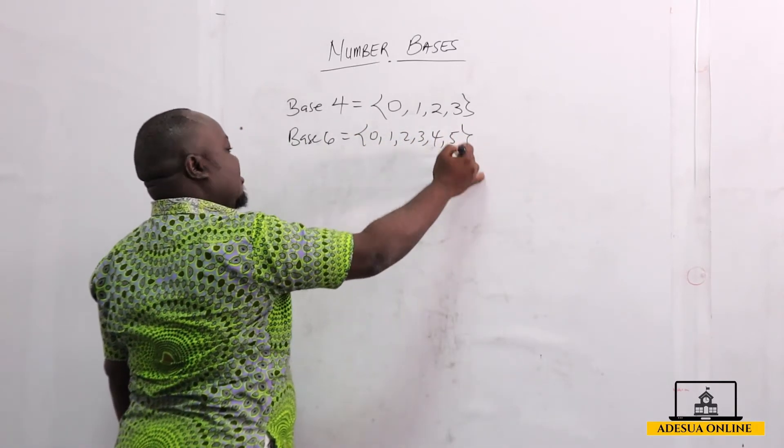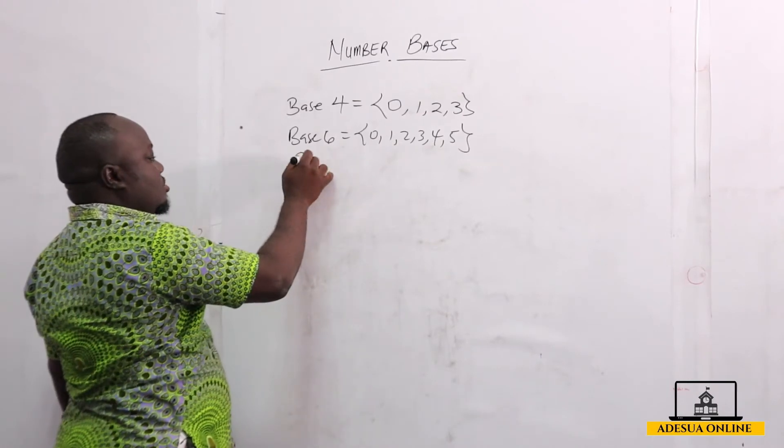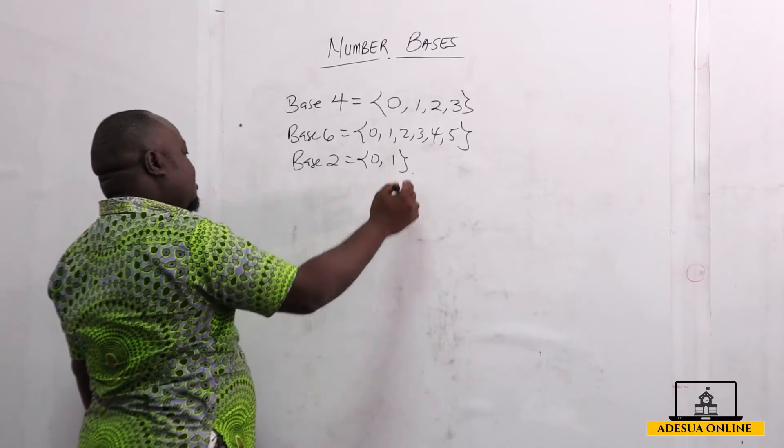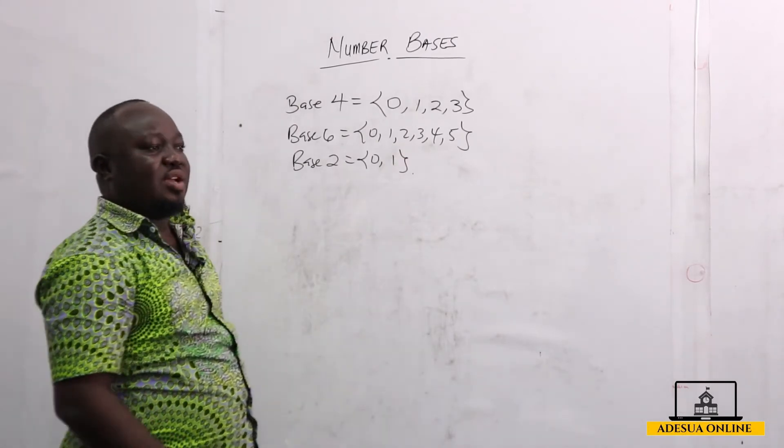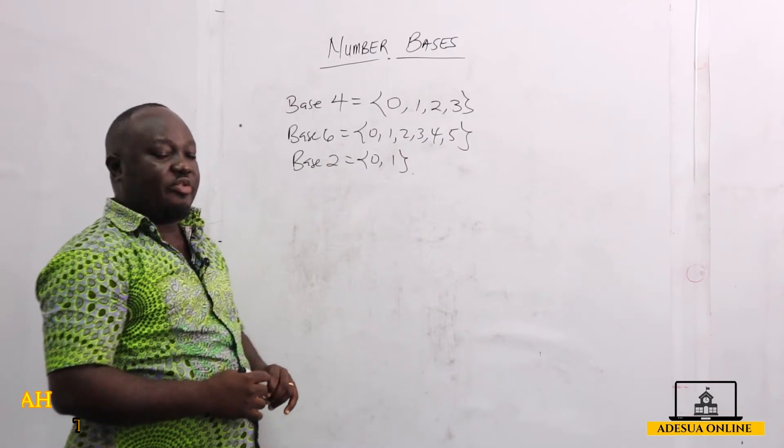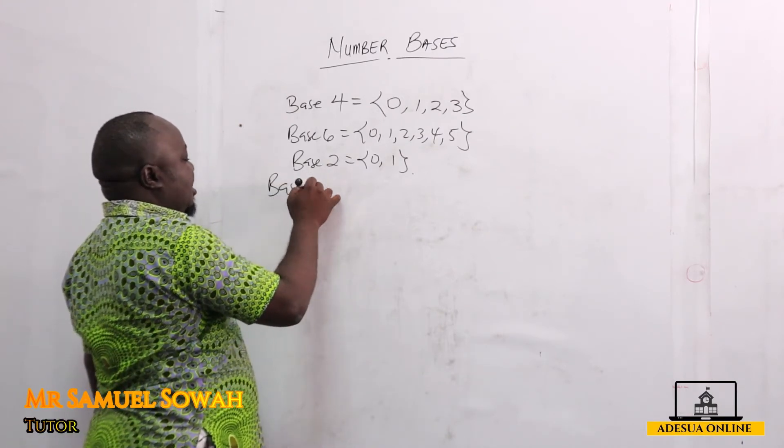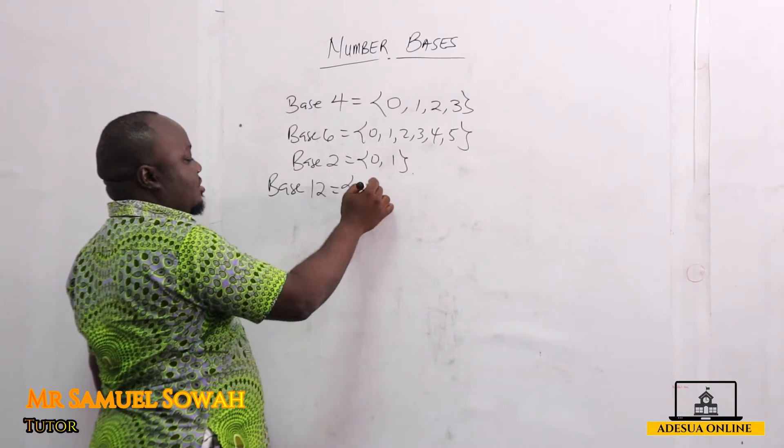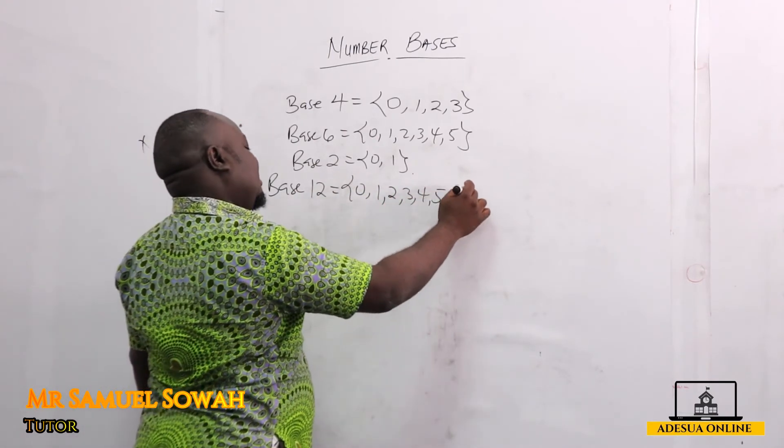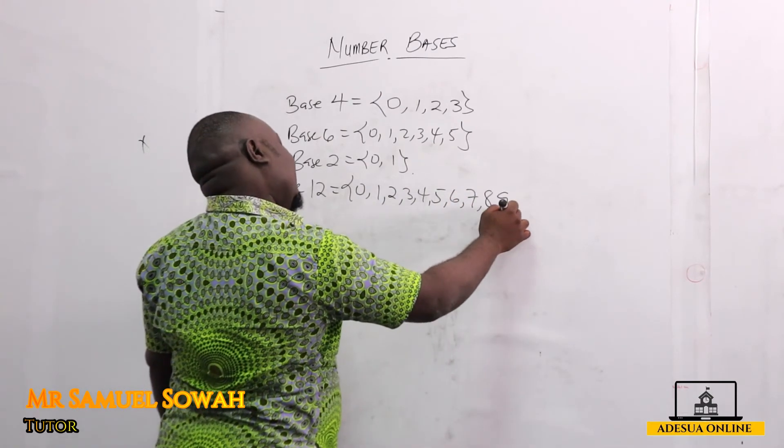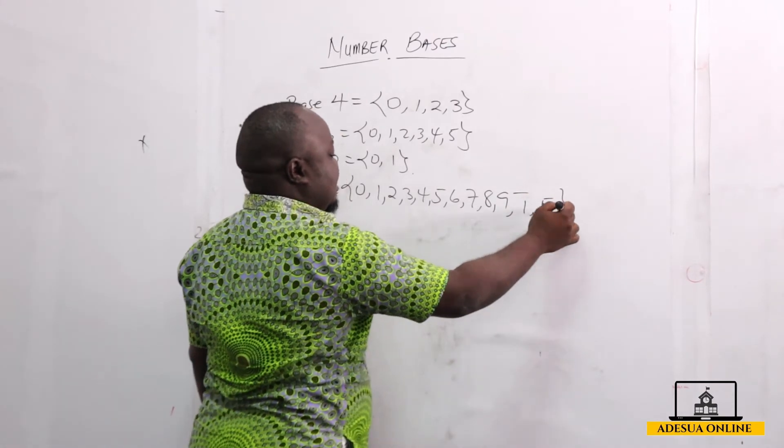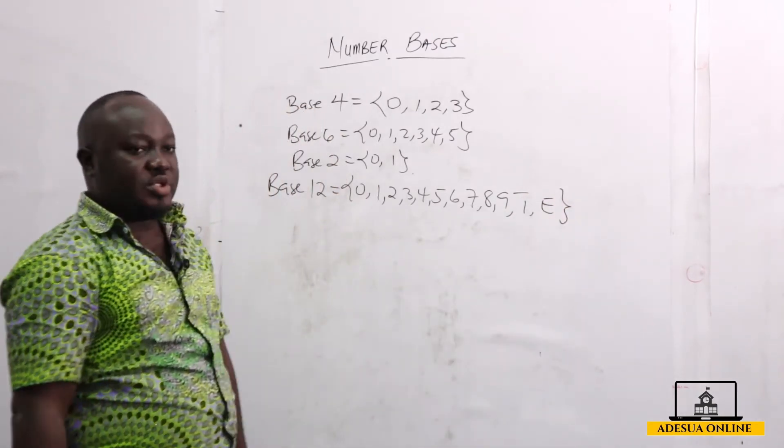When we talk about base two, we can have zero and one. Now, in the senior high school level, we only deal with numbers to base 12. Let me list for base 12 for you. Base 12 can be zero, one, two, three, four, five, six, seven, eight, nine, ten is capital T, and eleven is capital E. So this is base 12.